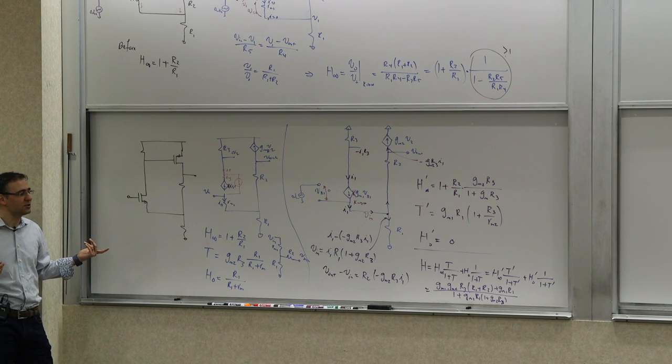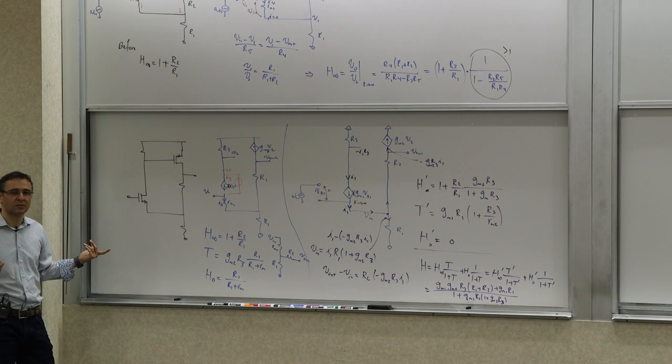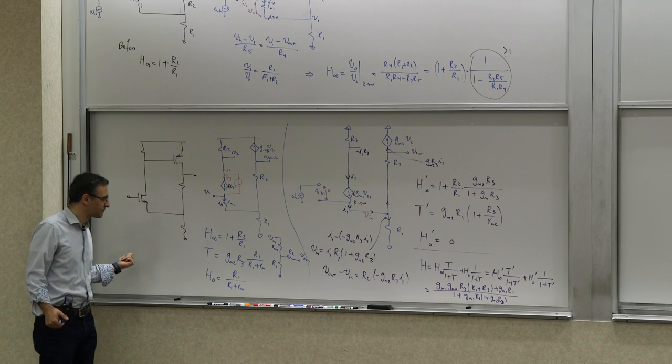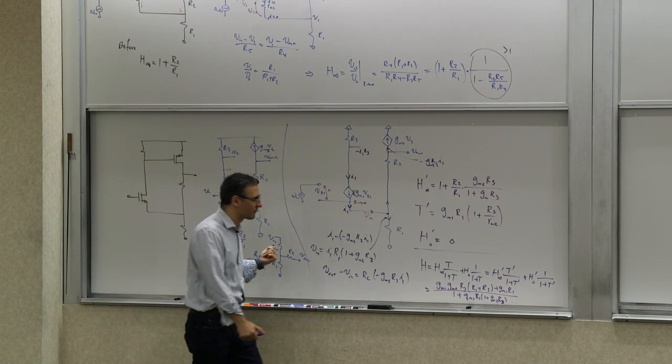The key takeaway is that the return ratio is not the same across different source choices — there is no invariance for return ratio, and neither is the asymptotic transfer function invariant. This example shows that. We need to define a parameter that is truly an invariant of the loop — the loop gain — and we'll see how these quantities relate to each other next time.